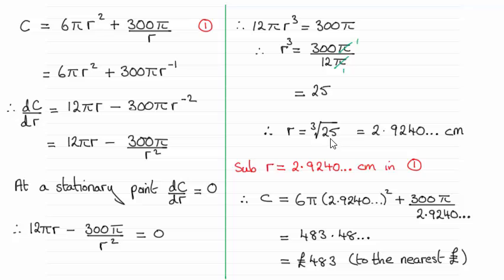So r would be the cube root of 25, which equals 2.9240 centimeters. I've substituted that value back into equation 1, and using the calculator, it turns out to be 483.48. So to the nearest pound, that's £483. I hope that makes sense.